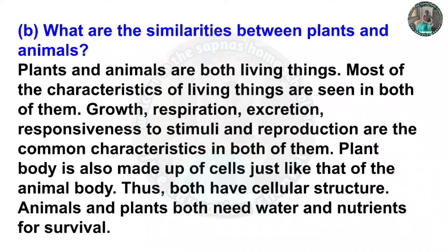Question B. What are the similarities between plants and animals? Plants and animals are both living things. Most of the characteristics of living things are seen in both of them — growth, respiration, excretion, responsiveness to stimuli, and reproduction are the common characteristics. Plant body is also made up of cells just like that of the animal body, so both have cellular structure. Animals and plants both need water and nutrients for survival.